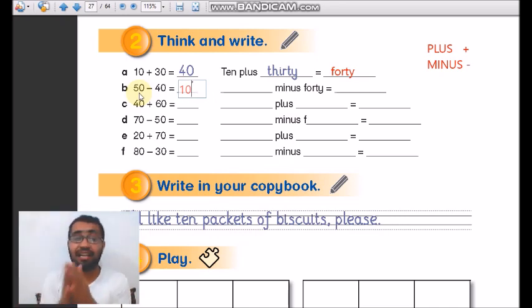The second number: you'll read 50 minus 40 equals 10, and you'll write them in this form on the other side. I'll leave you this exercise as homework, and also write the sentence: I'd like 10 packets of biscuits please.